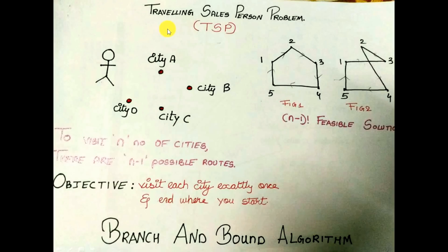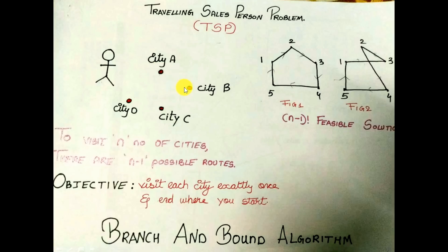Today we can study the Traveling Salesperson Problem — in short it is termed as TSP. For example, this is a salesman and he wants to travel n number of cities. Let's say he starts from city A and wants to visit city B, city C, and city D. So which route should he follow so that the distance traveled is minimized?